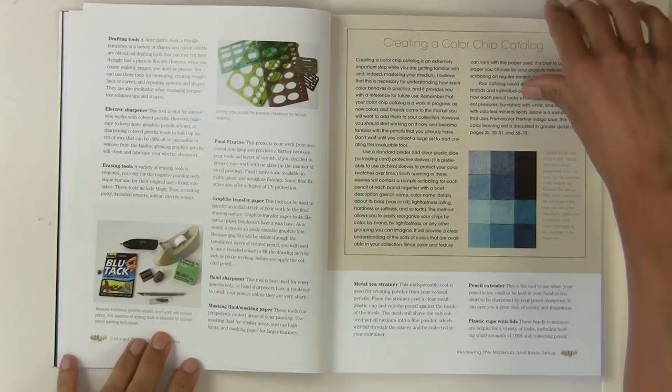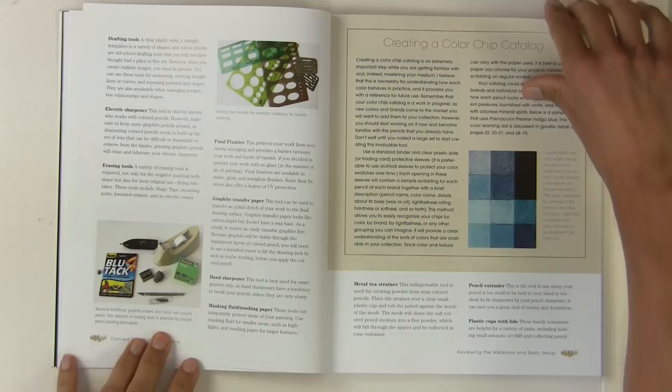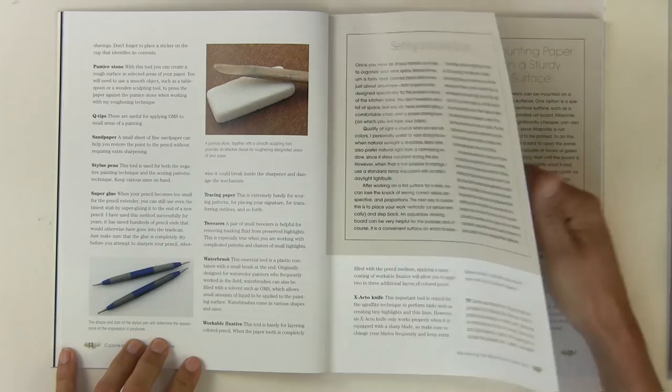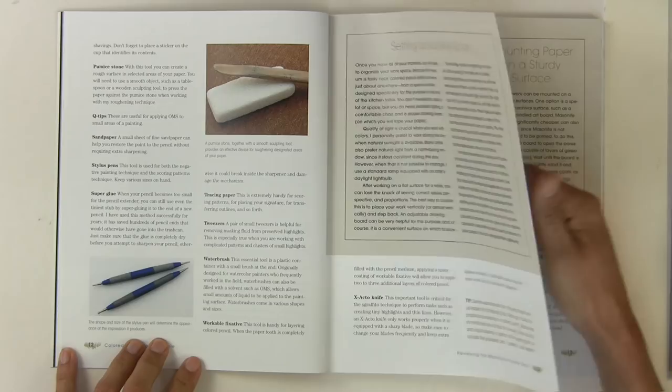So she goes on to that and says what she uses, other helpful tools, creating color chip catalogues, setting up your workspace even, and other smaller tools like Q-tips, sandpaper, stylus pens, super glue—lots of tools that perhaps you wouldn't have normally thought.